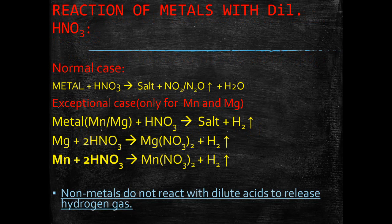Next is reaction of metals with dilute nitric acid HNO3. Except magnesium and manganese, metals do not evolve hydrogen gas with dilute nitric acid. This is due to the oxidizing nature of nitric acid.